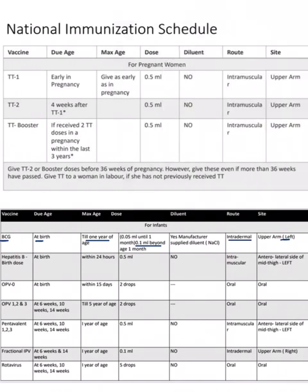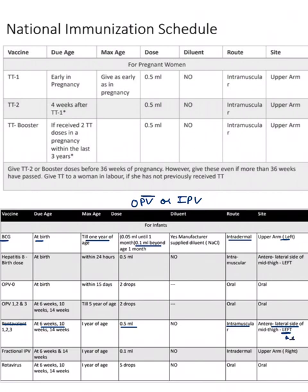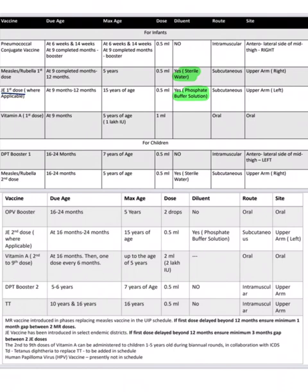For pentavalent vaccine: it is given at 6, 10, and 14 weeks, the dose is 0.5 ml, route is intramuscular, site is the anterolateral side of the mid-thigh, and it is given on the left side — as remembered by the BJP mnemonic where P stands for pentavalent.